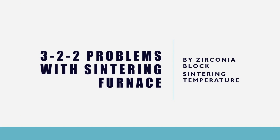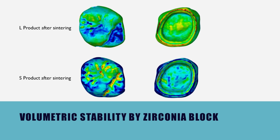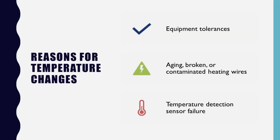Errors can still occur while sintering. Zirconia shrinks during sintering. Depending on the zirconia block, it can be temperature-sensitive or have problems with uniform shrinkage. It also causes problems if the sintering temperature is not high enough. There are many different blocks available in the market, and some blocks may not have stable sintering results, so it's recommended to check before using them.